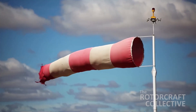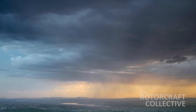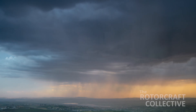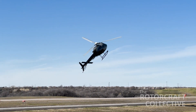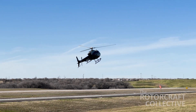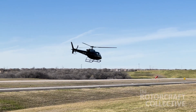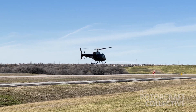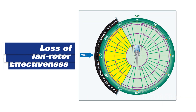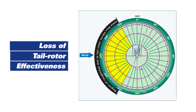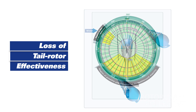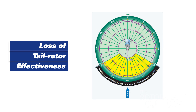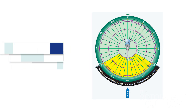Environmental conditions, especially strong winds and downdrafts, are routinely linked to accidents that result in loss of control. Avoiding conditions leading to a vortex ring state during landing should be part of your planning for every approach. Another undesired aircraft state is loss of tail rotor effectiveness, or LTE, which is one example of unanticipated yaw. Pilots should prioritize avoiding conditions leading to vortex ring state and loss of tail rotor effectiveness.